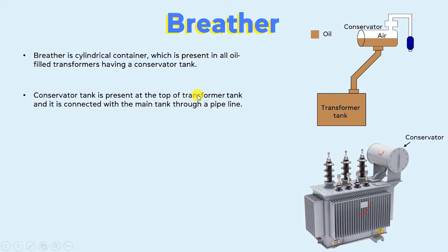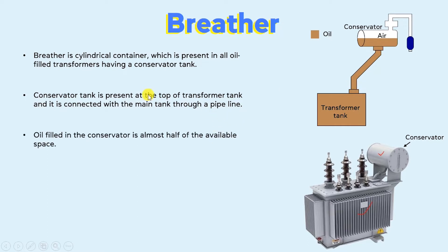The conservator tank is present at the top of the transformer main tank and it is connected with the main tank through a pipe. As you can see, this is the conservator and it is connected with the main transformer tank through a pipe. Oil filled in the conservator is almost half of the available space. The transformer tank is completely filled with oil, whereas oil present in the conservator is almost half of the available space.